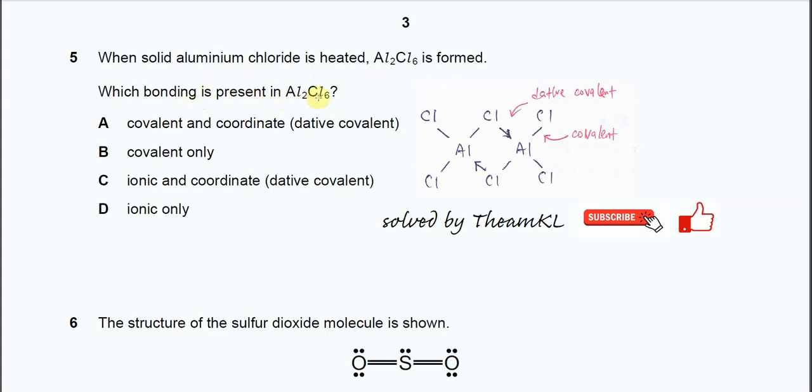So this one is a dimer that forms from the two AlCl3 molecules. It will form two dative bonds. It's a lone pair from the chlorine to the aluminum, and the other chlorine will form dative bonds with the other aluminum.